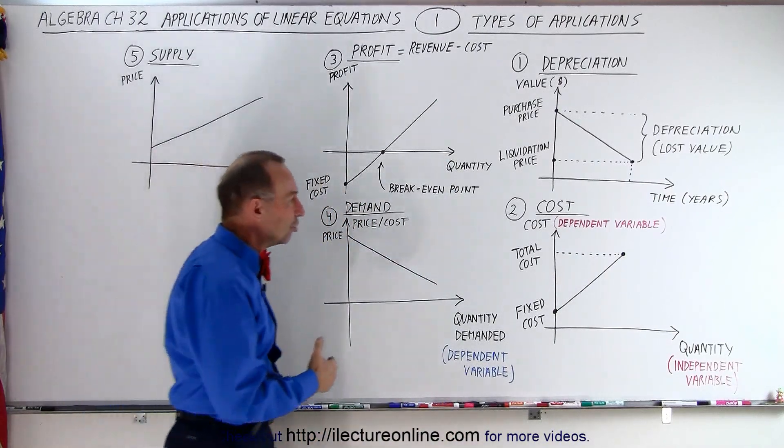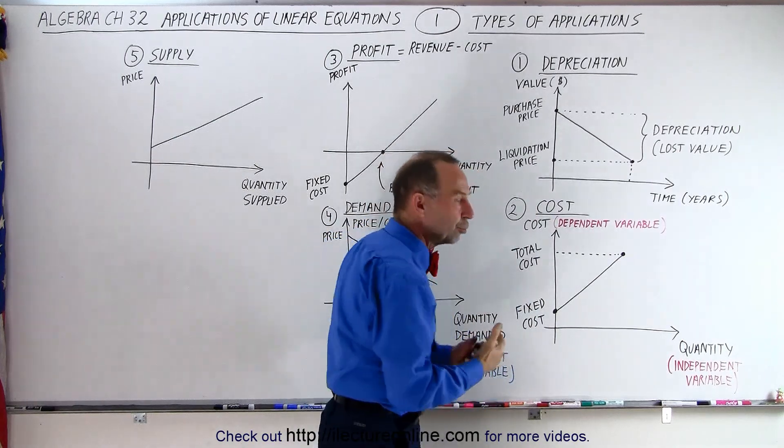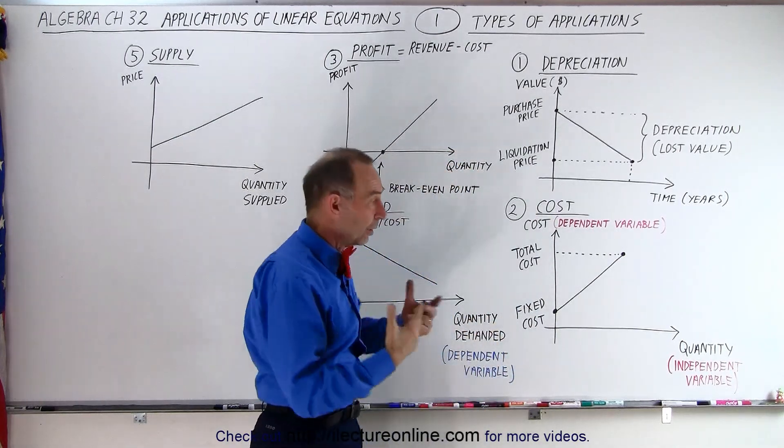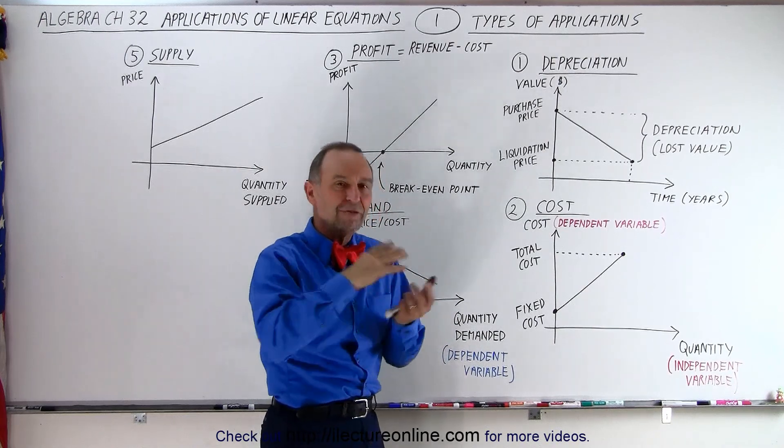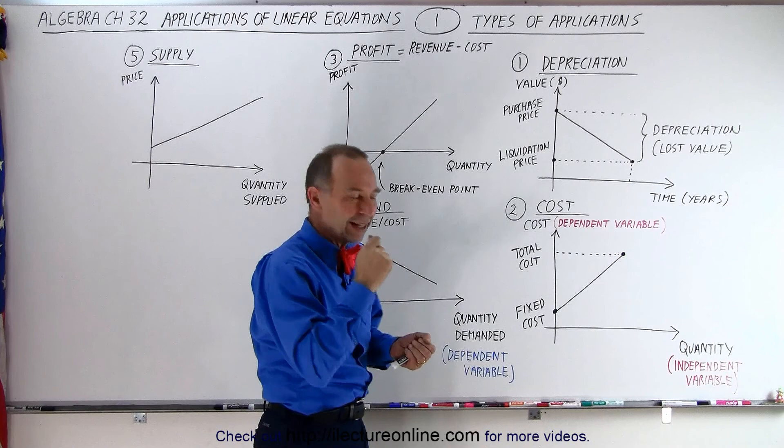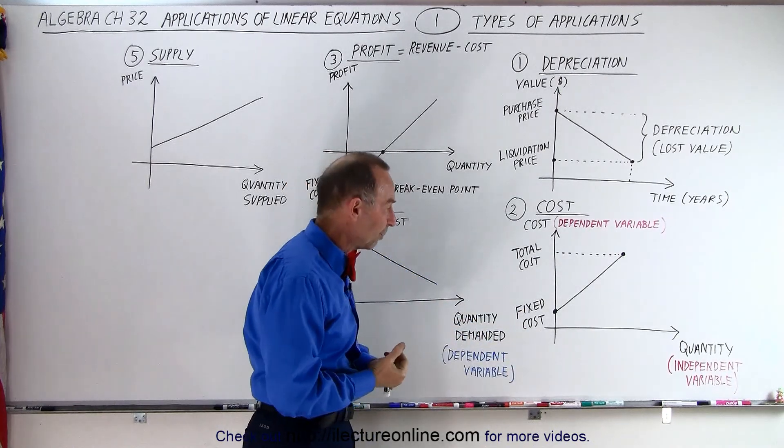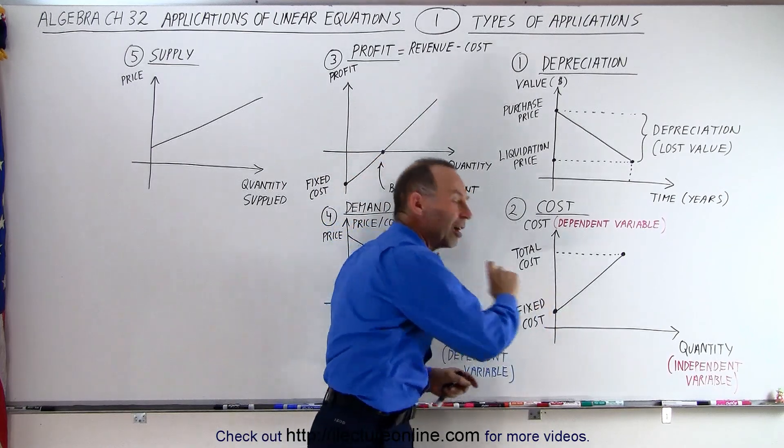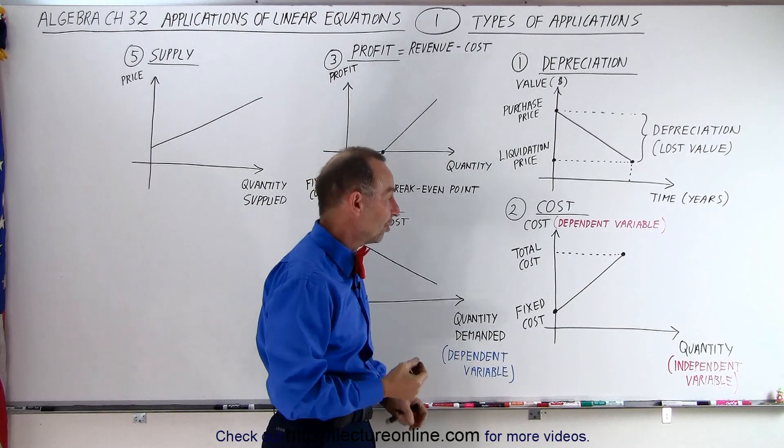Then the second type of application is what we call the cost application. Typically when you produce something, let's say you have a restaurant, a little restaurant, you produce hamburgers. Well, you have a certain amount of fixed cost. Even if you don't sell a single hamburger, you still need to turn on the lights, you need to hire people to run your place of business. You have a certain amount of fixed cost every day that will be independent as to how many hamburgers you sell.